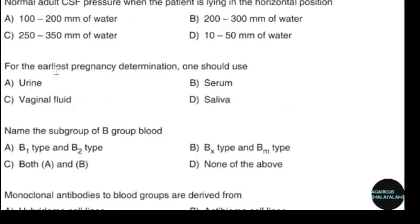Normal adult CSF pressure when the patient is lying in the horizontal position. Correct answer: option A — 100 to 200 mm of water.